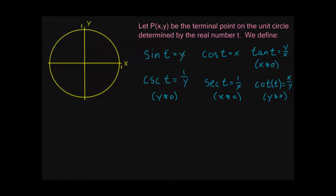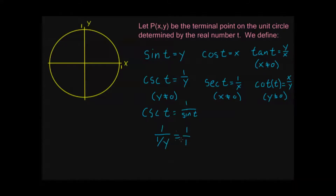Something I want to note: if sine of t is y, and cosecant of t is 1 over y, then I could also write cosecant of t as 1 over sine of t. That rule also applies to cosine and secant, and tangent and cotangent — these functions are reciprocals of each other. If I divide 1 by sine I get cosecant, and if I divide 1 by cosecant I get sine again: 1 divided by 1 over y is the same as multiplying by y over 1, so I just get y. So 1 over sine is cosecant, and 1 over cosecant is sine. That covers the definitions of these functions.